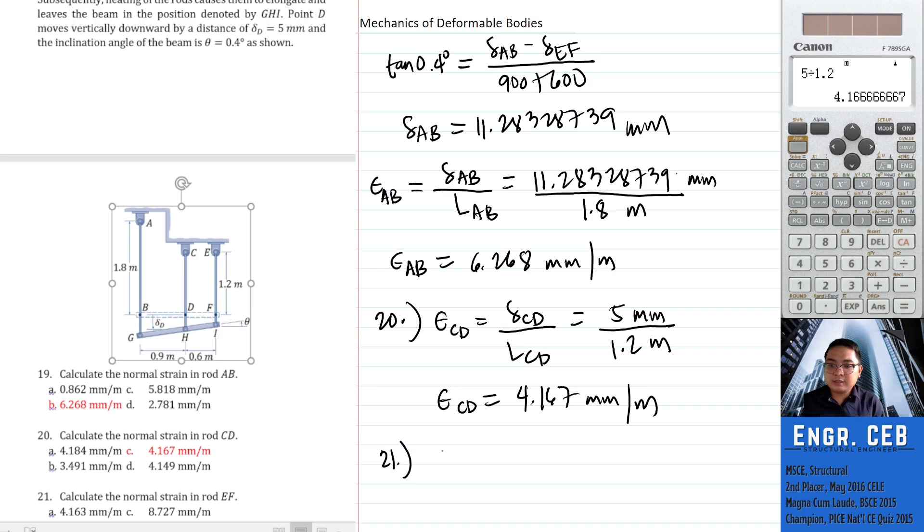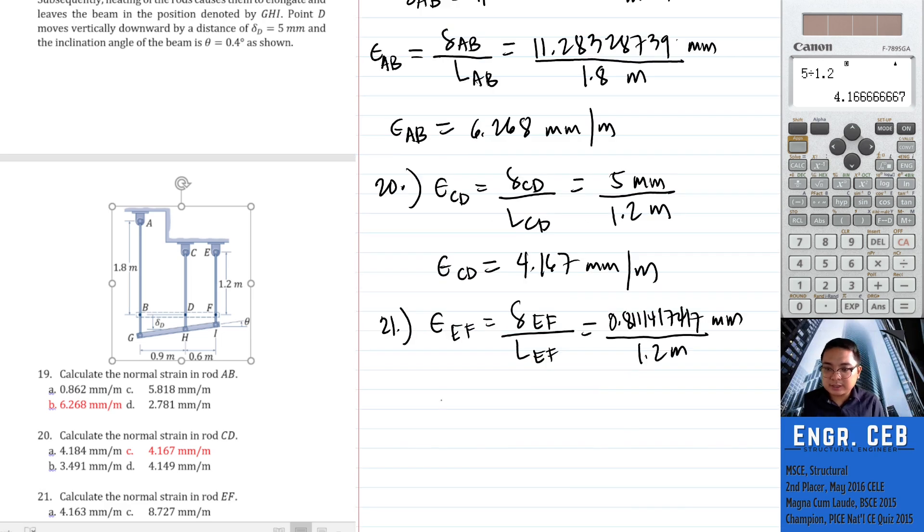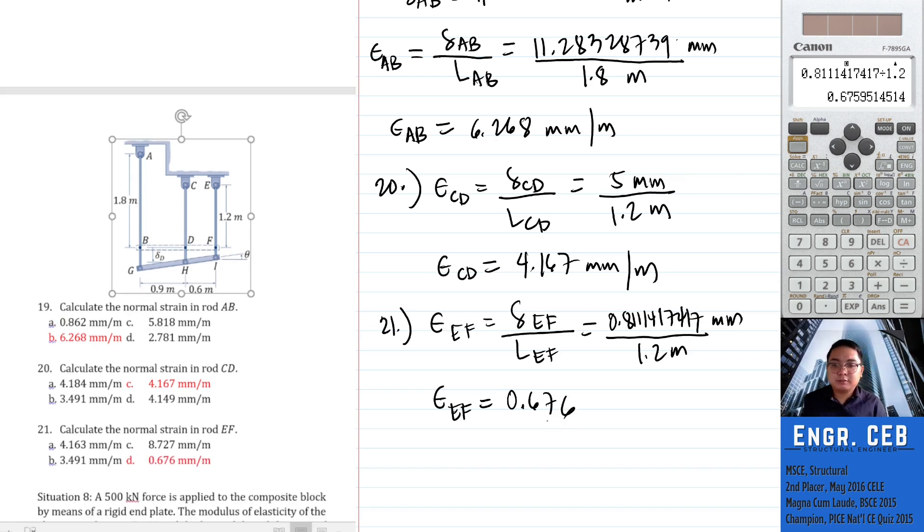And then lastly, strain in rod EF. Deformation EF divided by the length of EF. Substitute and then divide by the length of EF. According to the problem, the length is 1.2. Therefore, the strain in segment EF is 0.676 millimeters per meter. And that is letter D.